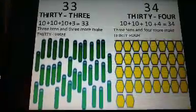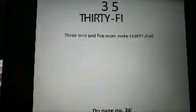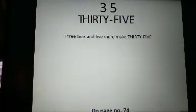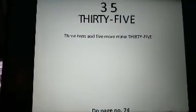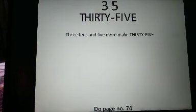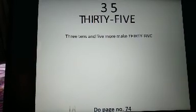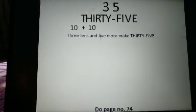Please count the number of objects in the picture. 3 tens and 5 makes the number 35. T-H-I-R-T-Y F-I-V-E, 35. Please repeat after me: T-H-I-R-T-Y F-I-V-E, 35. The number 35 comes just after the number 34. 3 tens and 5 more make 35.